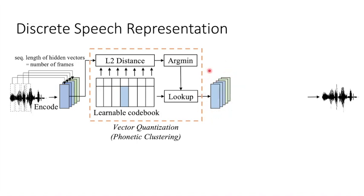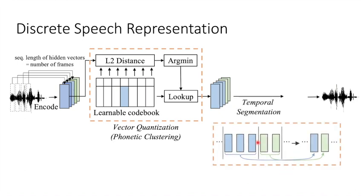Now, we have a code sequence of finite possible choices. We merge consecutive same codes, and we got a shorter code sequence, whose length is roughly equal to the length of the underlying phonetic sequence. This is the temporal segmentation.